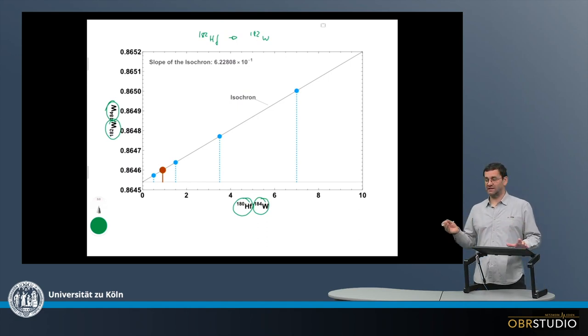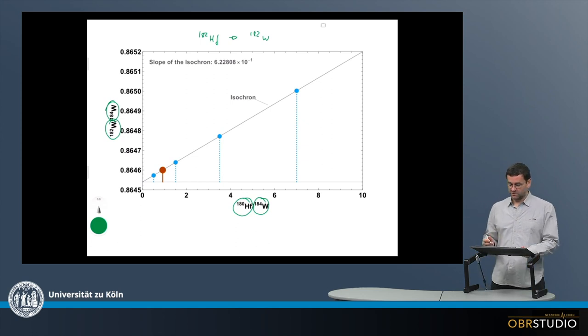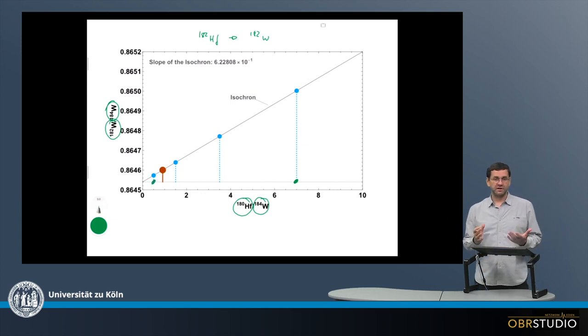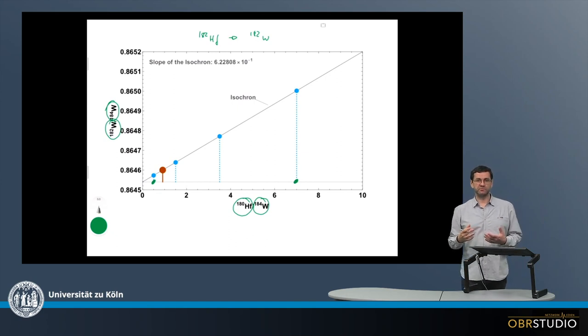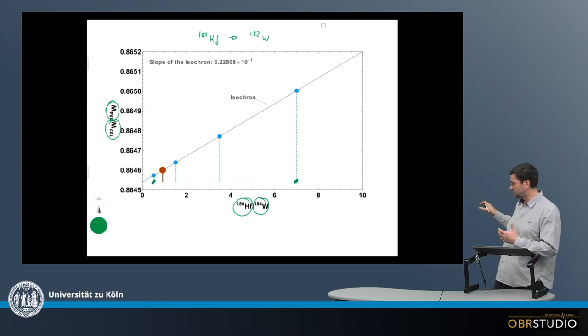Because Hafnium is lithophile, so it will be in silicates, and Tungsten is siderophile, so it will be in metal phases. So you can use for the high Hafnium-Tungsten some silicates, and for the low Hafnium-Tungsten some metal-rich component, for example. But for the principle, it doesn't matter, we just need components of various compositions here.